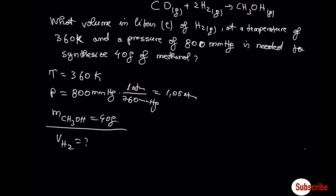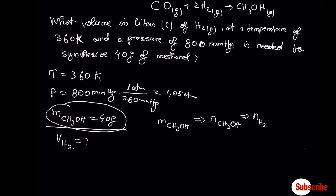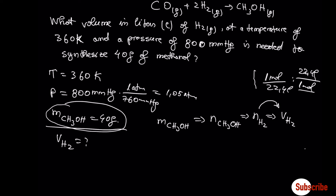Let's move to the final example dealing with gas stoichiometry. Starting from the mass of methanol, we use its molar mass (found from the periodic table for C, H, and O) to get moles of methanol. From moles of methanol, using stoichiometry of the balanced equation, we get moles of hydrogen. Then from moles of hydrogen we find the volume. If you are at standard temperature and pressure — 0°C or 273 K, and 1 atm or 760 mmHg — you can use the conversion 22.4 L per 1 mol.